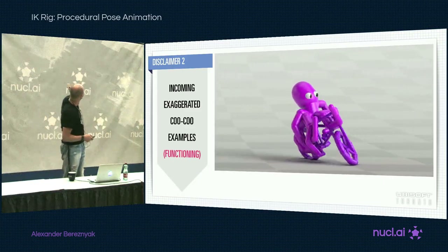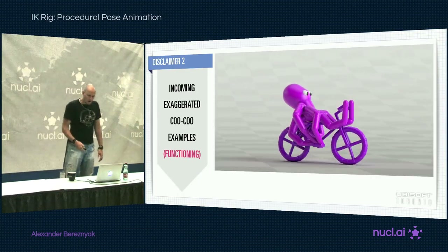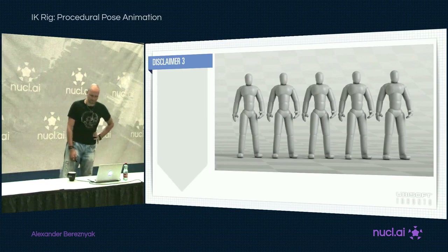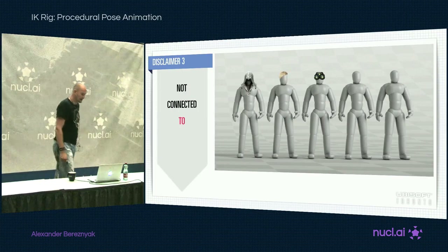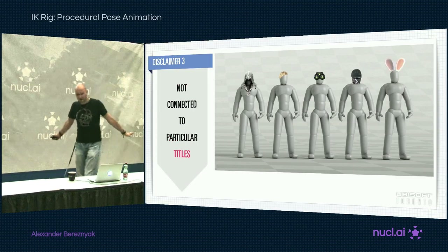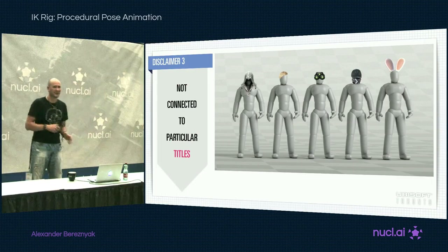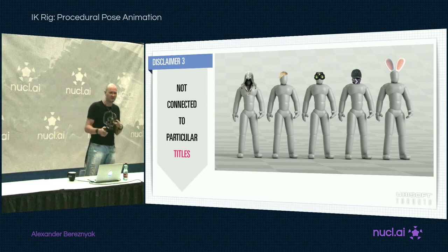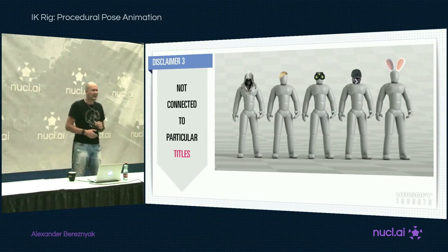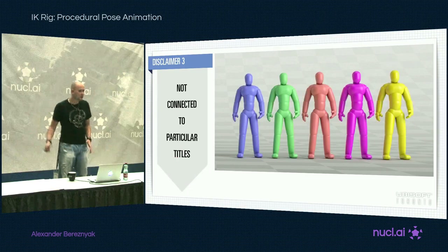It doesn't mean that whenever you need an octopus riding a bicycle, you need IK rig - you can just get an octopus, take him to a mocap studio, do just that. But what I want to show is something specific about taking animation from character A to character B. This guy rides for glory, but he will also help me talk about quadrupeds later on. Whatever you see here today is not connected to specific particular titles. We are currently evaluating the application of this tech, seeing how far we can take it, and I can't talk about specific titles today. Everything will be revealed in due time.